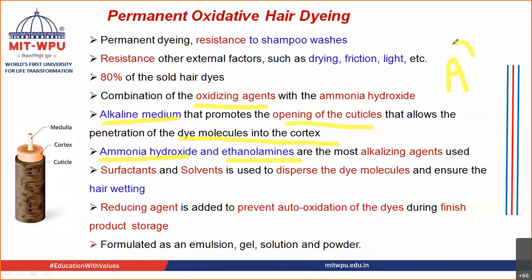With the newer hair dyes and with the problems that ammonia has on the hair shaft and the body, ammonia is not as preferred now. You have ammonia-free hair dyes available in the market. Ammonium hydroxide, ethanolamine, monoethanolamine — these have been used as alkalizing agents. Surfactants can also be added in order to disperse the dye molecule — they are very good dispersing agents and also responsible for wetting of the hair.